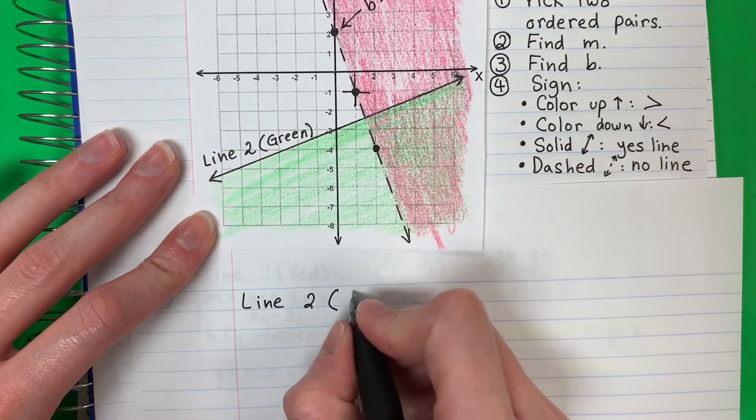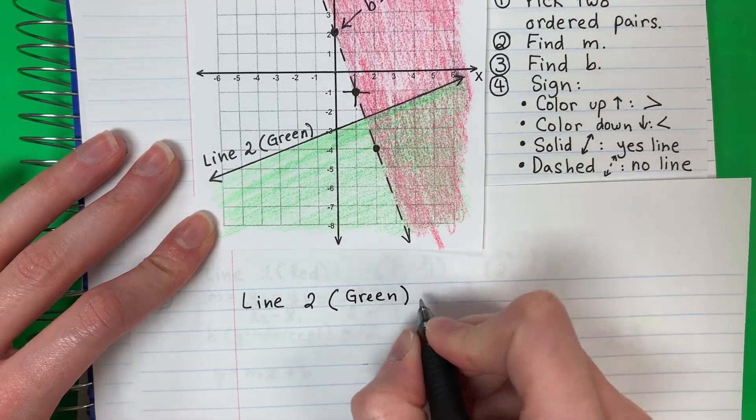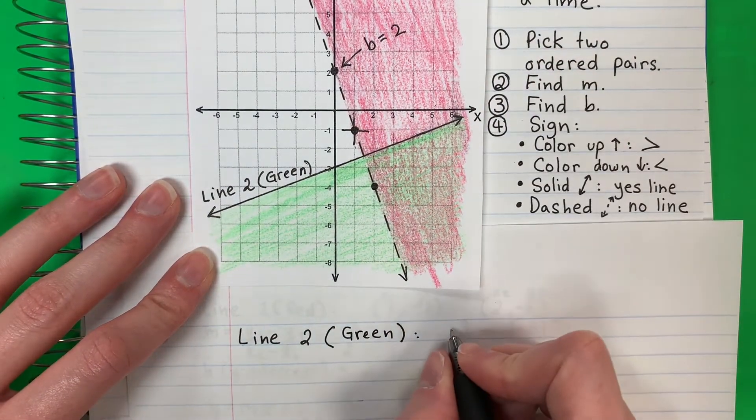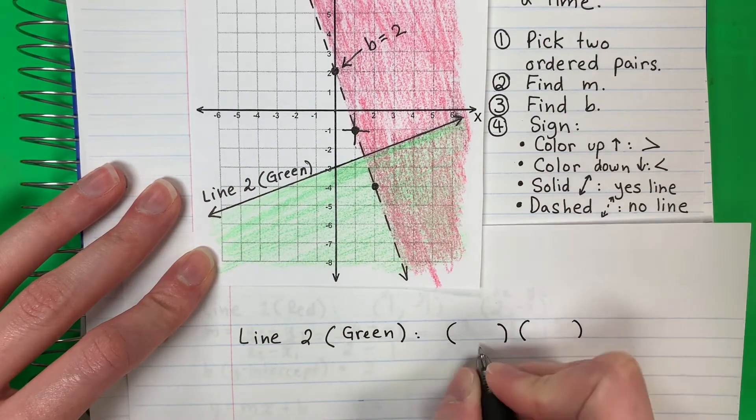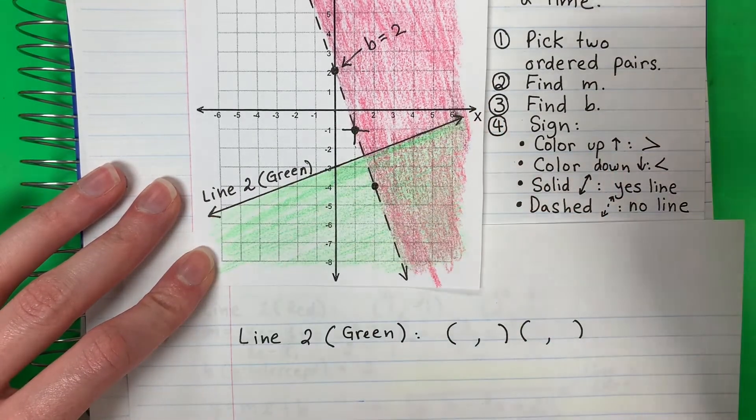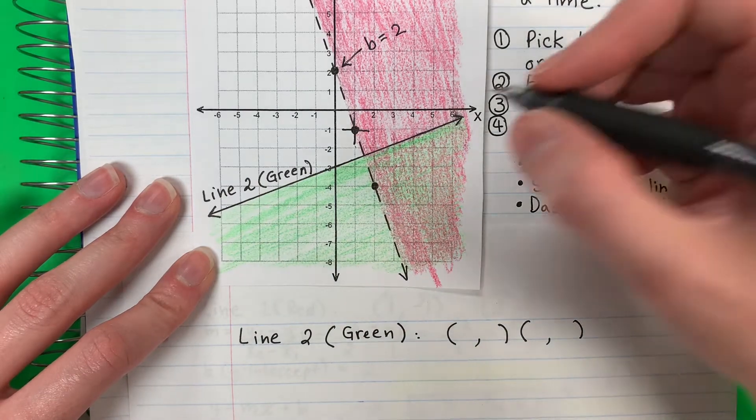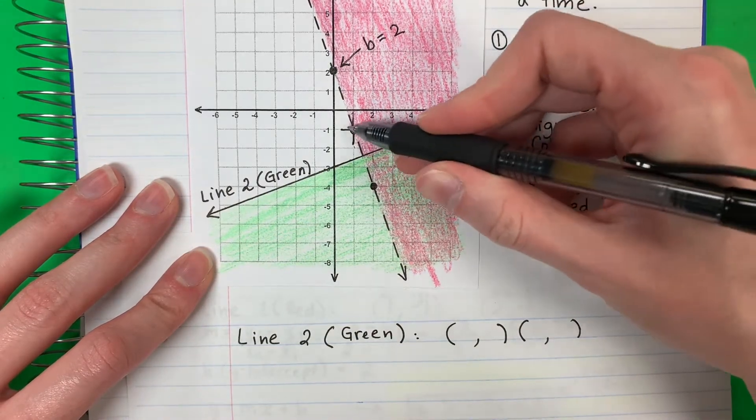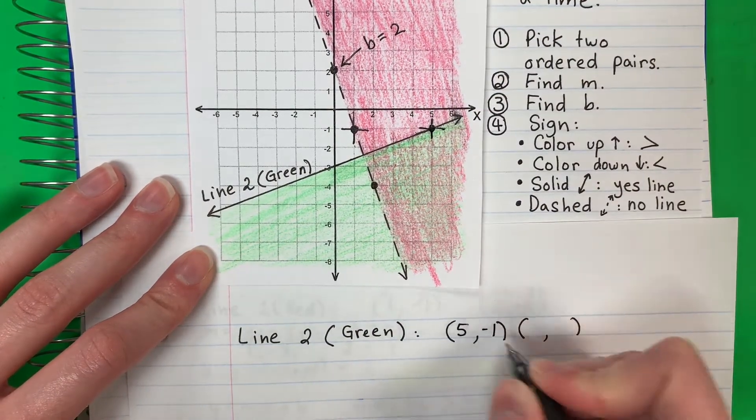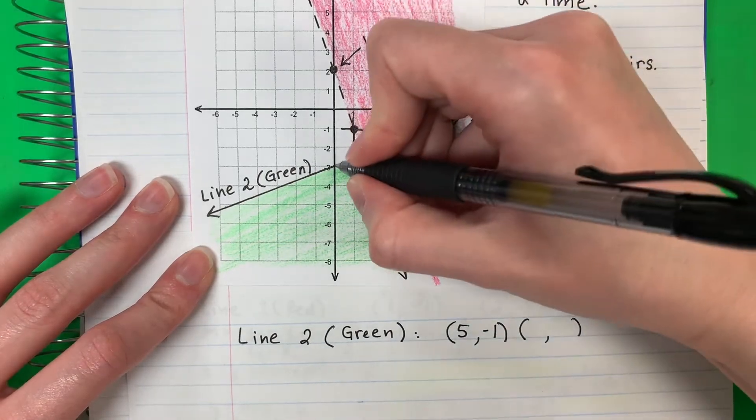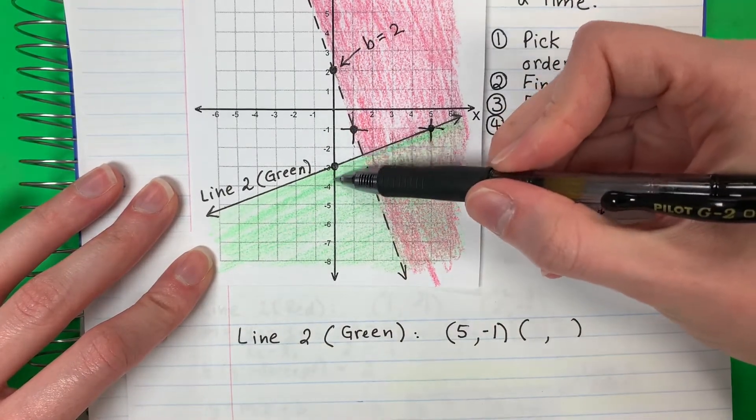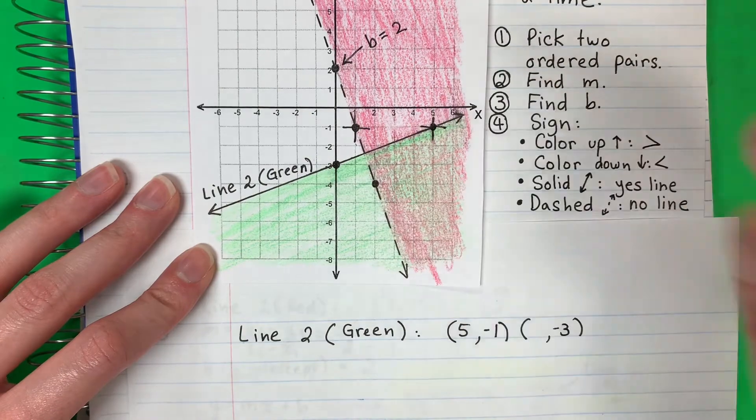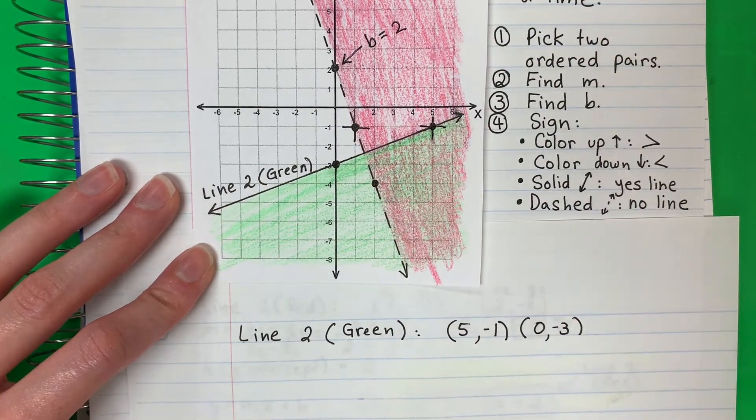Line 2 is the green. So first I need to pick two points in a corner, en una esquina, on the green. Here's a good one. Do you see how it's in a corner? That is x 5, y negative 1. And then another good one, I'm going to use the y intercept. That is negative 3 is y because it's touching the line. So I'll put 0 here.